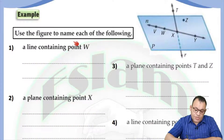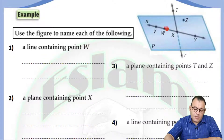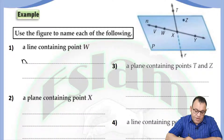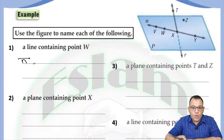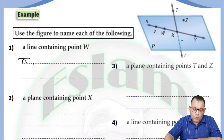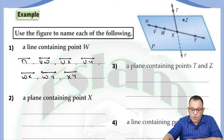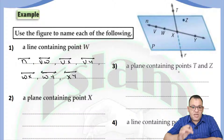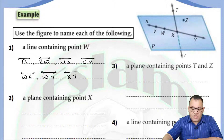In this problem, we need to use the figure to name each of the following. We need the line that contains point W. The name of a line could be a small letter — which is line N — or we can choose any two points lying on this line. So we can say VW, or VX, or VY — all of them name the same line. We can also say WX, WY, or XY. Now we need a plane that contains point T and point D. To find the plane which contains two points, you need a third point that is not collinear.